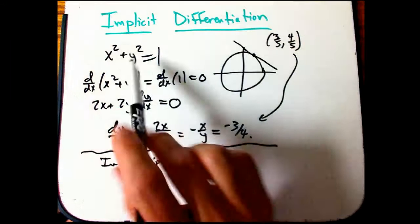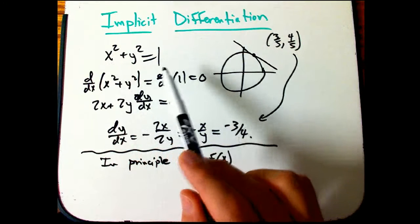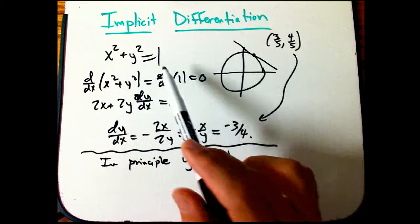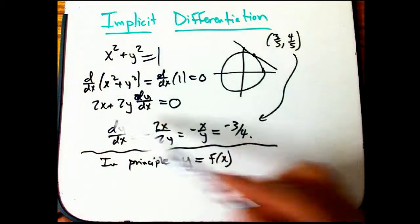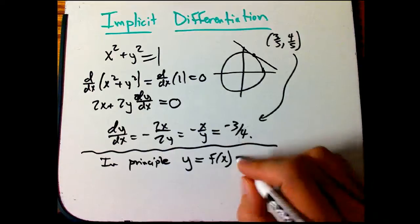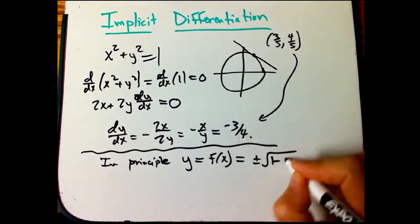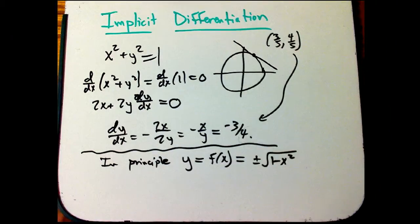I'm going to take advantage of the fact that in this particular case, I can actually solve for y as a function of x to discuss it in a concrete way. And then I'm going to talk about how often the point of implicit differentiation is when you can't solve it explicitly. But in this case, you solve y as a function of x, you get plus or minus root 1 minus x squared.